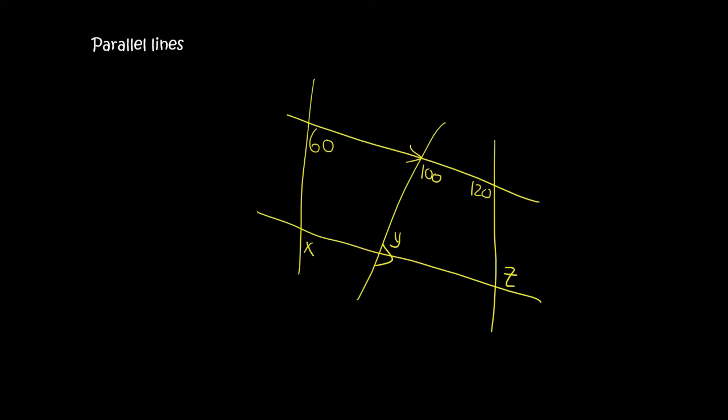Okay, so here we need to find X, Y, and Z. So for the X one, we can see that this shape here is an F. So X would be 60.